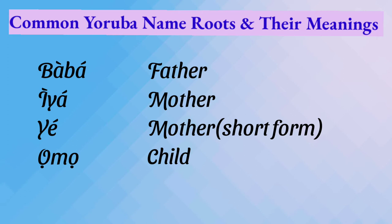The next set of name roots are related to family. Baba is father, Iya is mother, and Iye is also mother — a short form of Iya. These — Baba, Iya, and Iye — are usually used when the parents believe that a departed loved one, such as a grandparent who has died, is being reincarnated, or they simply want to honor that person's memory. That's when they use these names.